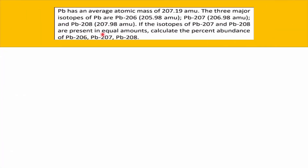Here's an example of a HOT's question in Chapter 1. I'm going to be reading this question. Plumbum has an average atomic mass of 207.19 amu. The three major isotopes of Plumbum are Plumbum-206, with its isotopic mass of 205.98 amu,